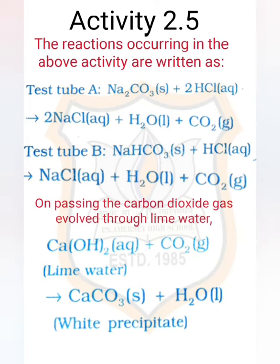In test tube A, Na₂CO₃ (sodium carbonate, solid) plus hydrochloric acid (aqueous) gives salt NaCl plus water plus carbon dioxide gas. In test tube B, NaHCO₃ (sodium hydrogen carbonate) plus hydrochloric acid gives salt NaCl plus water plus carbon dioxide gas.